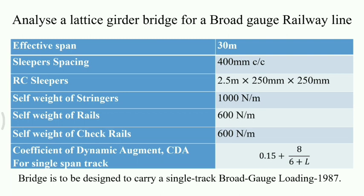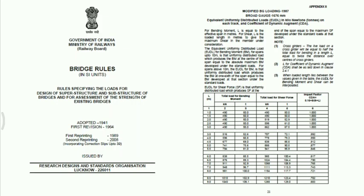The bridge is designed to carry a single track broad gauge loading. We refer to the bridge rules — rules specifying loads for design of superstructure and substructure of bridges. Modified broad gauge loading 1987, gauge 1676 mm, is mentioned in Appendix 2, page 21 of the bridge rules. The equivalent uniformly distributed load on each track and coefficient of dynamic augment are given in that table. To determine forces in each member we consider the total load for bending moment with respect to span.